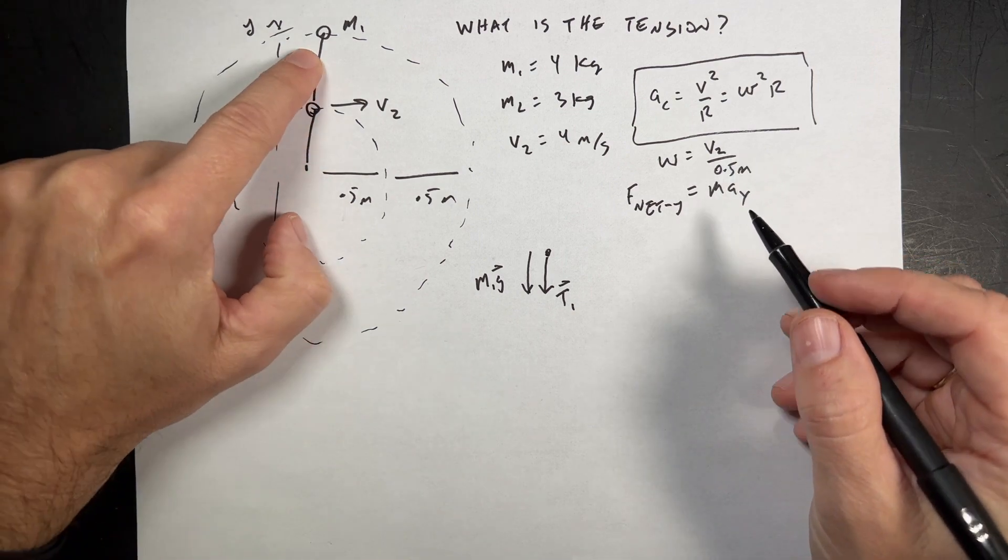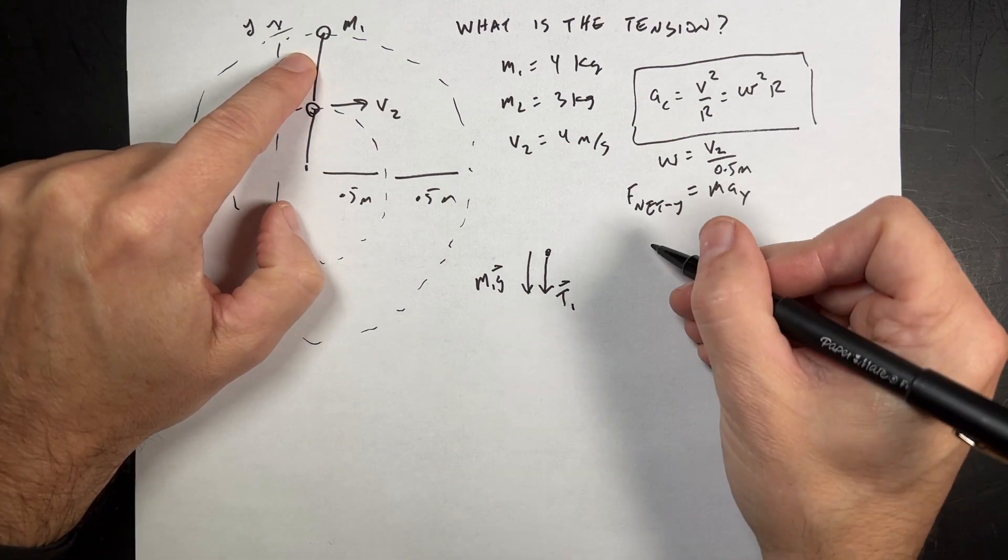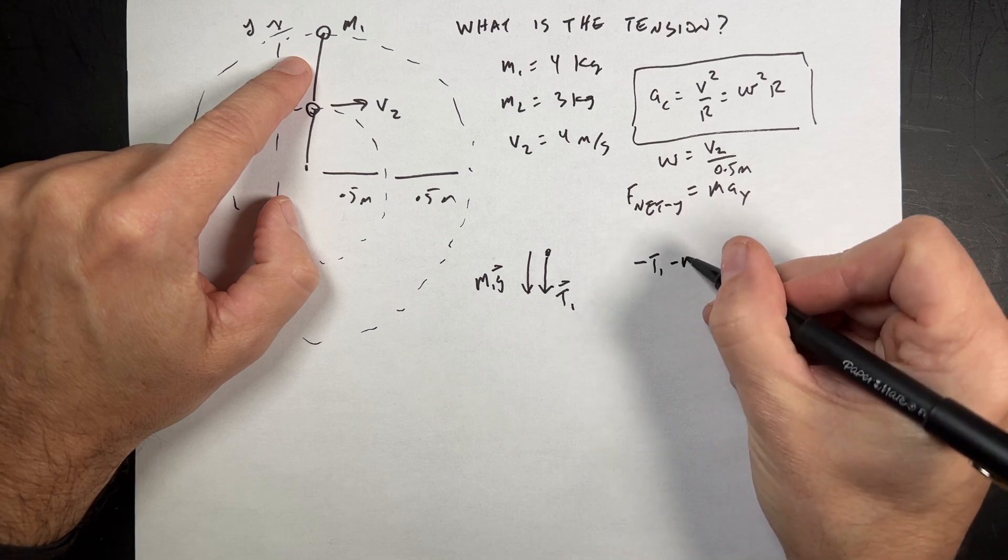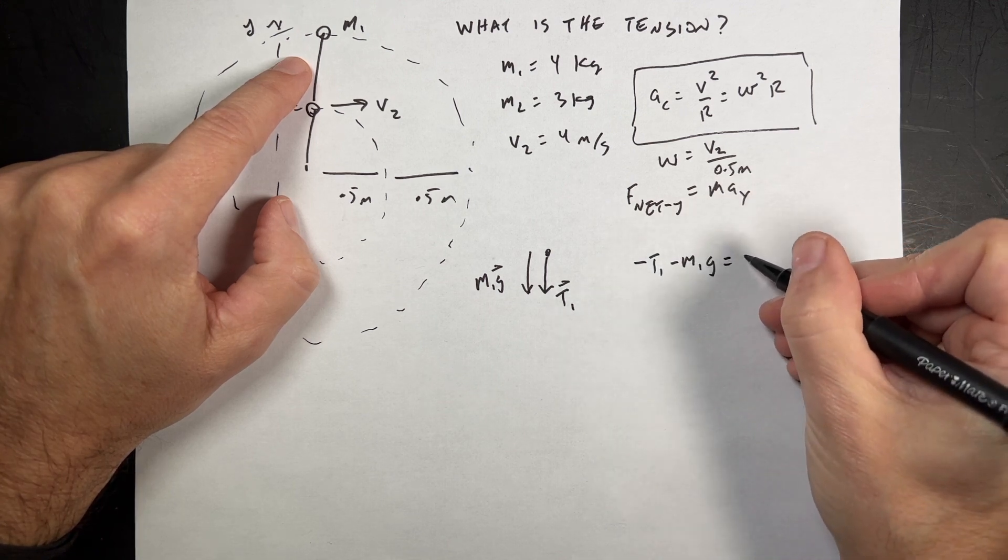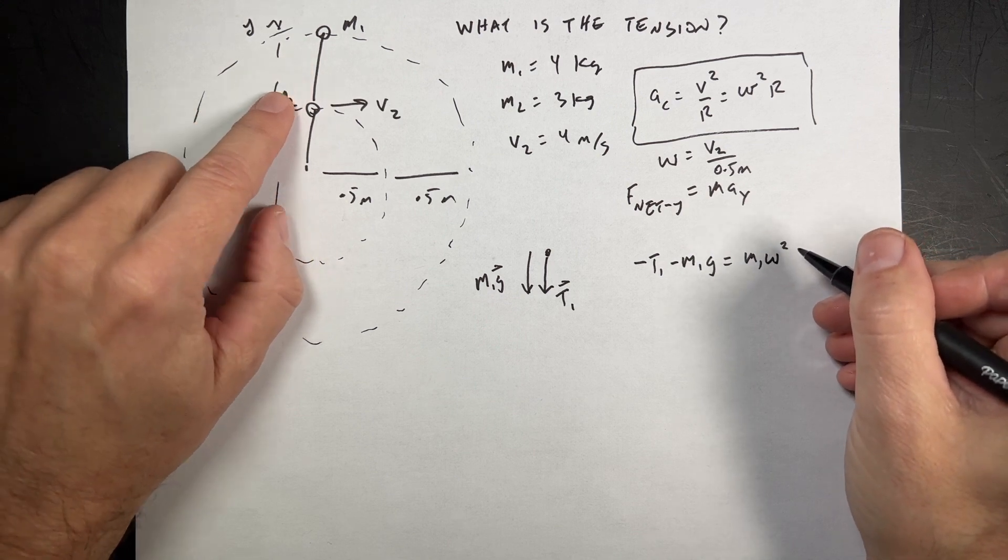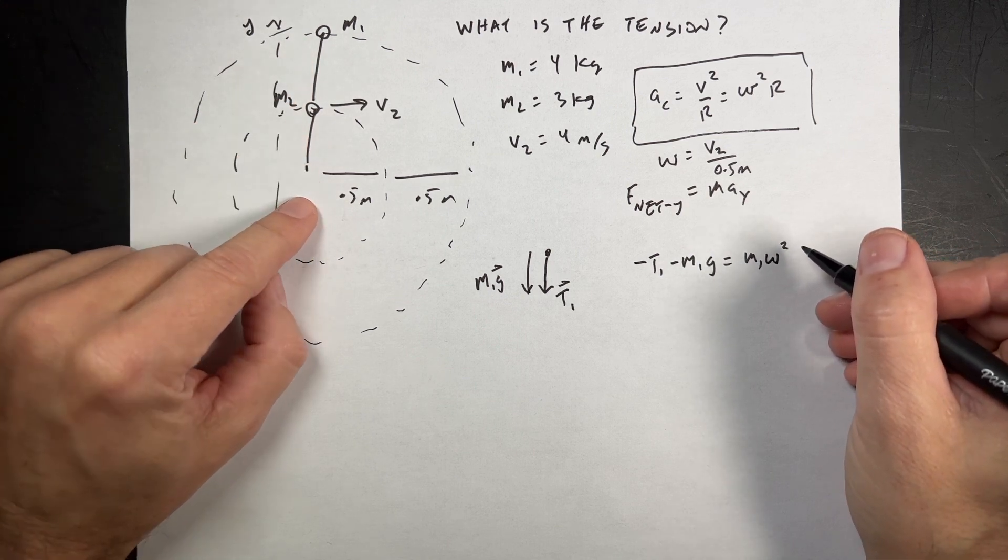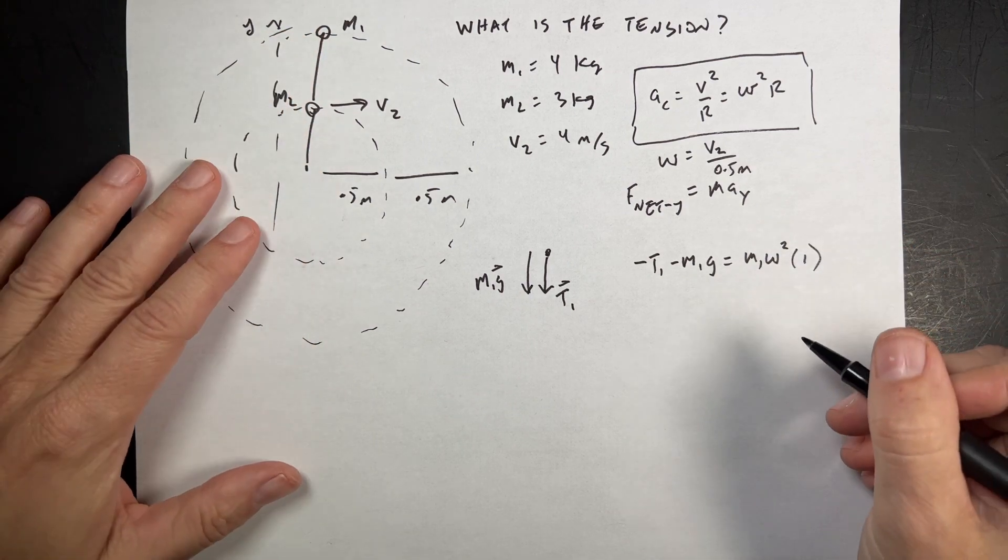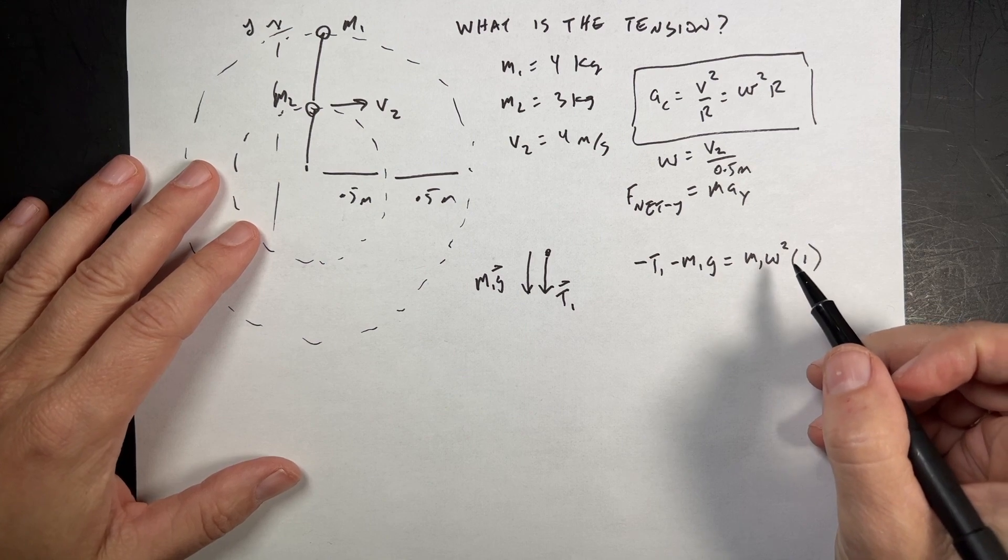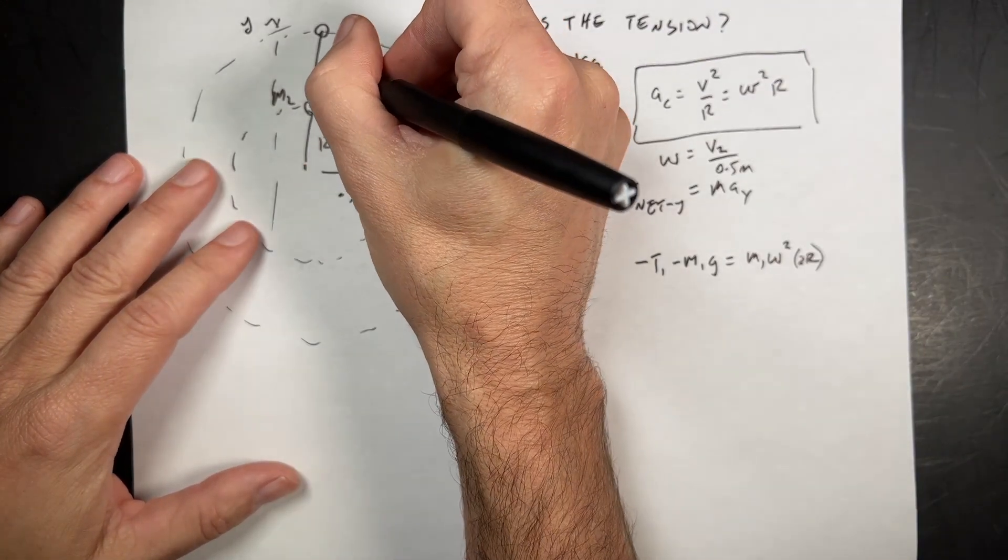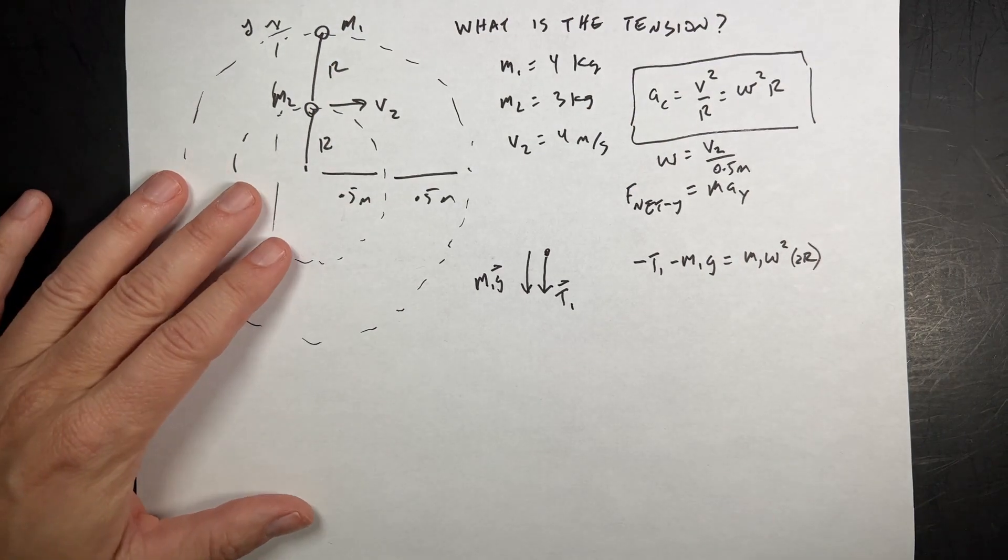For this mass, I can write the net force equation in the y direction. It's going to be minus t1 minus m1g equals m1 omega squared r. Now, in this case, r is going to be the distance from here to there. So it's going to be 1. I'm just going to write it as 1 meter. And I wouldn't normally do that. In fact, I don't want to do that. Let's call this 2r. Let's call this r and that r. There. I feel better now.